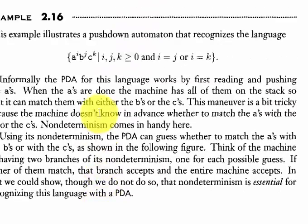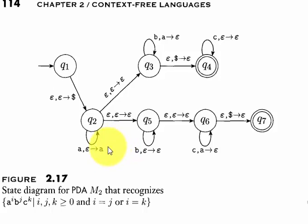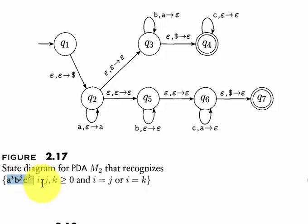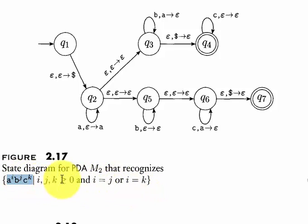Now a more complicated example: the language a^i b^j c^k. These are context-free languages. The problem with context-free languages is that they can't keep track of three variables — they can track two but not three. Here, the conditions are i, j, k > 0 and either i equals j or i equals k. So either a and b are equal in count, or a and c are equal — we keep track of one pair and ignore the third.